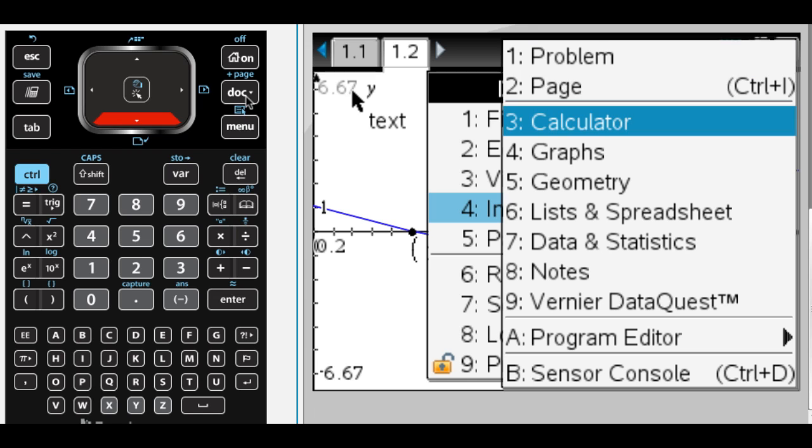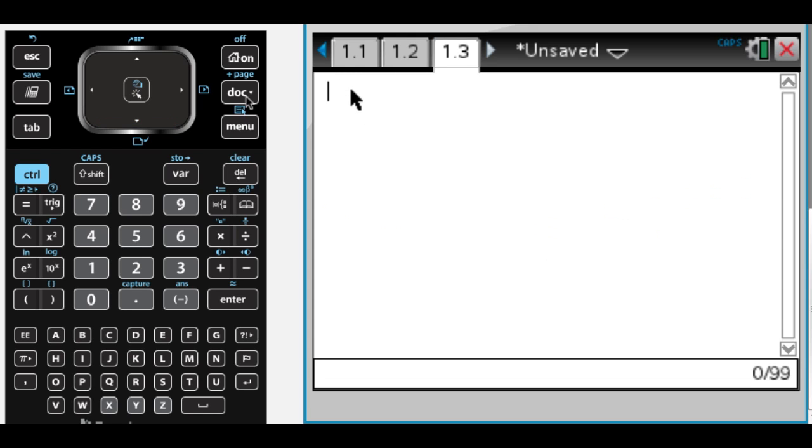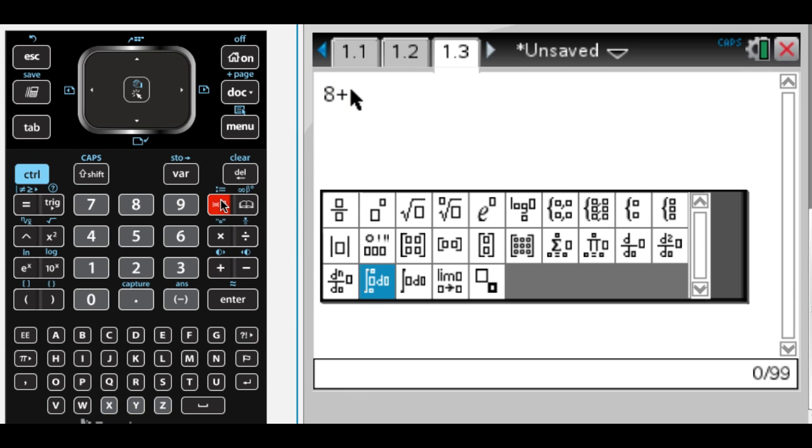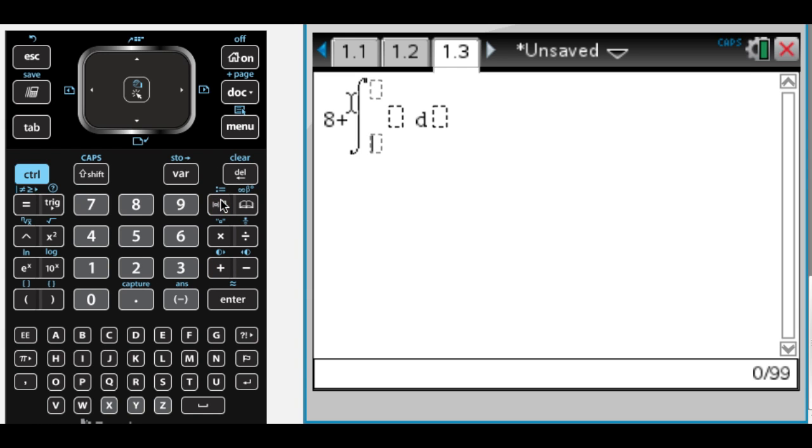For part C, let's insert a new page. Not a new problem, a new page. And we need the position at t equals 2. Well, we know where it is at t equals 0, so it's at 8. So at t equals 2, it'll be at 8 plus the integral from 0 to 2 of v of t dt. So that's a rearrangement of the fundamental theorem.